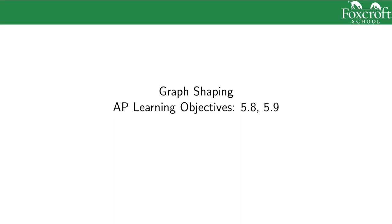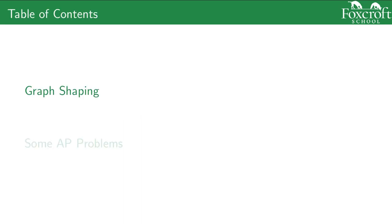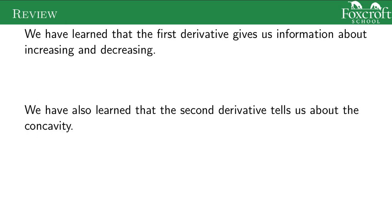In this video we're going to put together our last few videos and start talking about the total shape of a graph. First let's review what we did in our last few videos. We talked about the first derivative and the first derivative test — that tells us if our graph is increasing or decreasing. Then we learned about concavity: concave up like a cup, or concave down like a frown. Now we're going to put these things together and think about the shape of graphs.